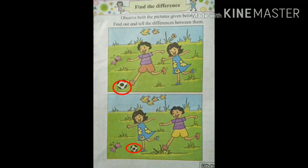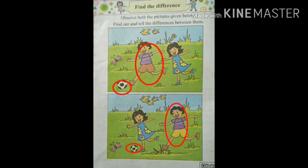Now students, observe the picture again and tell me the difference. I got the second difference. Let's circle the ball size — take a pencil and circle the ball size. Very good. Now observe the picture again, students, and see the difference — can you see the difference?